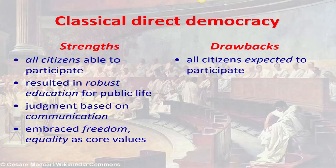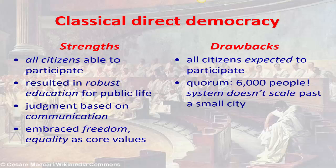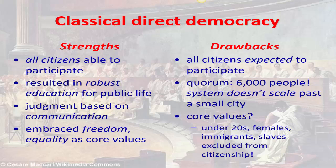On the other side of the coin, all citizens were expected to participate in the political process — you didn't have an out just because you weren't interested. If you were a Greek citizen, you had to show up and participate. The quorum for the Athenian assembly was 6,000 people — a really big meeting — coming together 40 times a year to make all the decisions. This is a system that doesn't scale past a small city. You can't imagine all American citizens coming to the same meeting at the same time to vote on every single law. And again, the core values of freedom and equality didn't apply if you were under 20, a woman, an immigrant, or a slave — only certain people got citizenship rights and privileges.